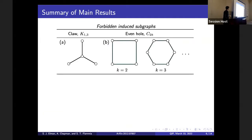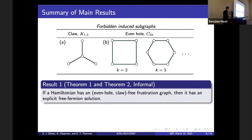Now I'll state the main result informally. We have a class of forbidden induced subgraphs: the claw (a complete bipartite graph between one vertex and three non-neighboring vertices) and an infinite family of graphs called even holes (cycles of even length). Our main result — theorem one and theorem two in the paper — is that if a Hamiltonian has an even-hole claw-free frustration graph, then it has an explicit free fermion solution, exactly of the form that Paul Fenley gave in his 2019 paper.